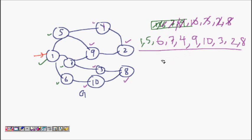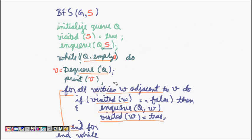So the breadth first search output of the given graph is: 1, 5, 6, 7, 4, 9, 10, 3, 2, 8. This is the BFS traversal. I hope you understood it and liked this explanation. If you have any questions, please put them in the comment section, and if you like the video please subscribe to my YouTube channel to watch more such videos.